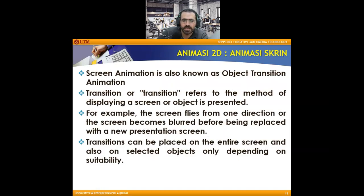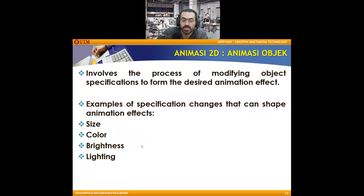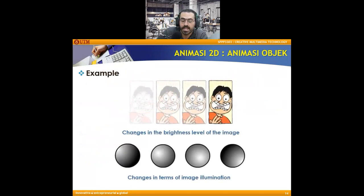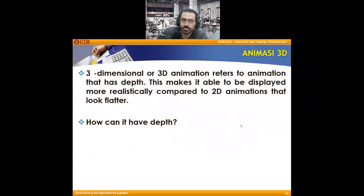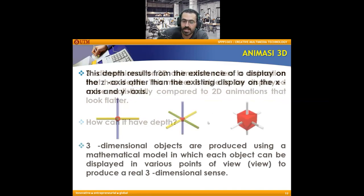Screen animation, also known as object transition animation, involves effects used between scenes — playing with light, zoom in and out, the size of the object, color, and lighting. This is an example of how to change the brightness level of the image and how to change the image in terms of illumination. Then we have 3D animation, which refers to something that has depth, making it able to display more realistic objects, unlike 2D.